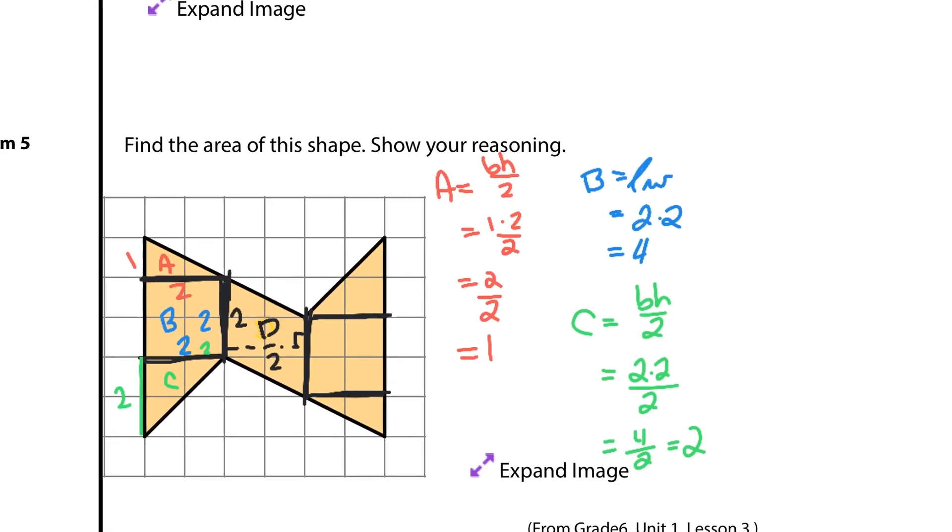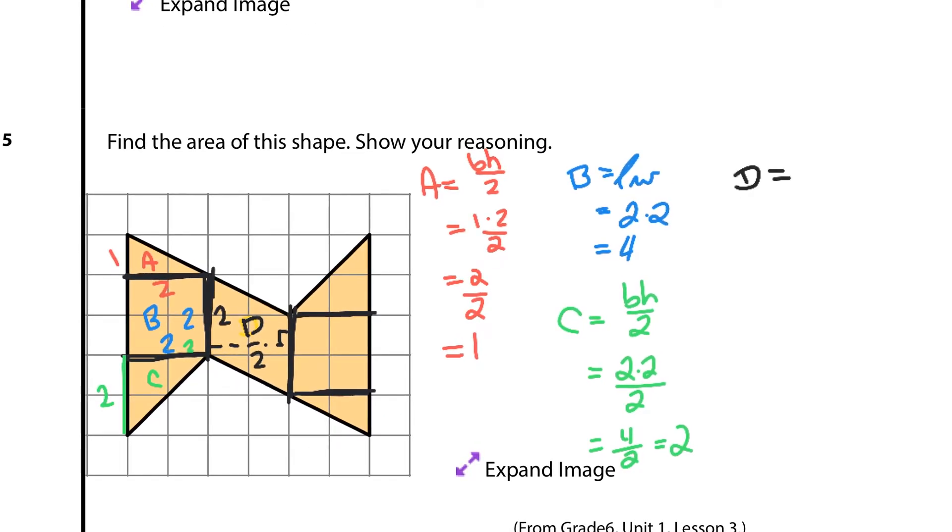So for D, every parallelogram is base times height, which will be two times two, which is simply four. All right.